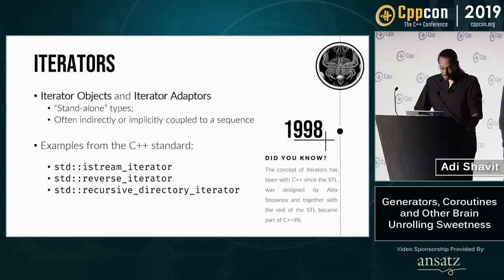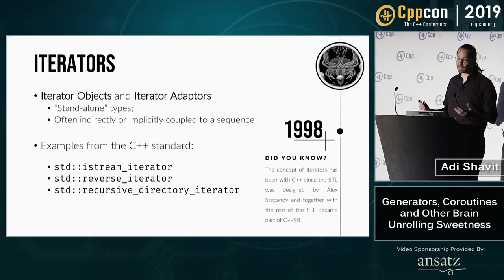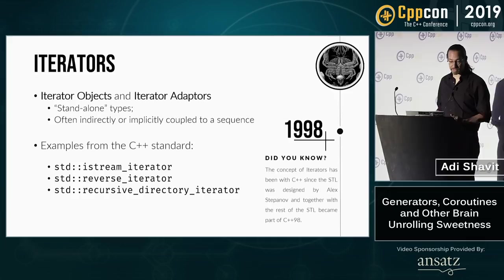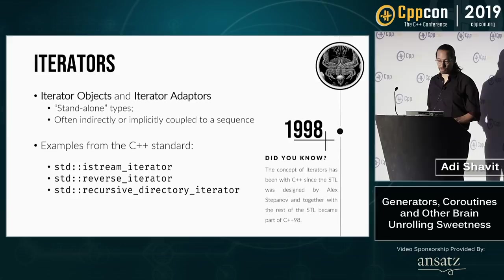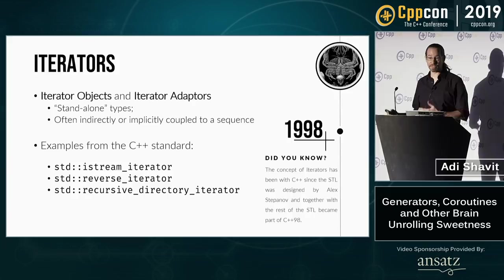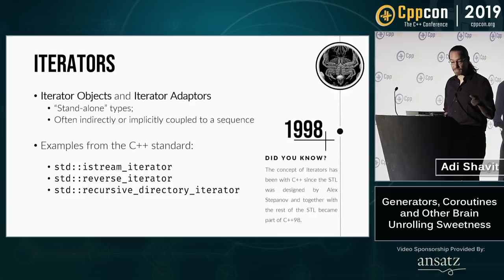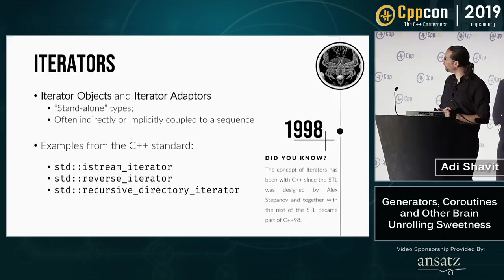We're all familiar with iterators. Iterators were introduced by Stepanov in 1993 and became part of the STL standard library in 1998. They're often standalone types only indirectly or implicitly coupled to an actual concrete sequence. We have many examples: the istream_iterator reads elements from an input stream, reverse_iterator reverses the direction of a given iterator for iterating back to front, and C++17 brings us the recursive_directory_iterator, which recursively iterates over all elements in a filesystem and all its subfolders.